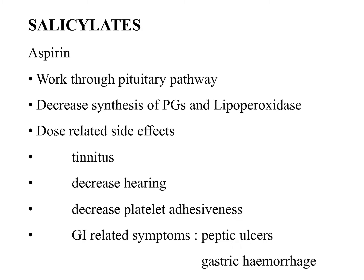Beginning with analgesics — first are the salicylates, with aspirin being the most well-known. Aspirin works through the prostaglandin pathway, decreasing the synthesis of prostaglandins and lipoperoxidase, which are involved in joint inflammation. However, it has side effects such as tinnitus and decreased hearing. As an anticoagulant, it decreases platelet adhesiveness. Aspirin also has well-known GI-related complications such as peptic ulcer and gastric hemorrhage.